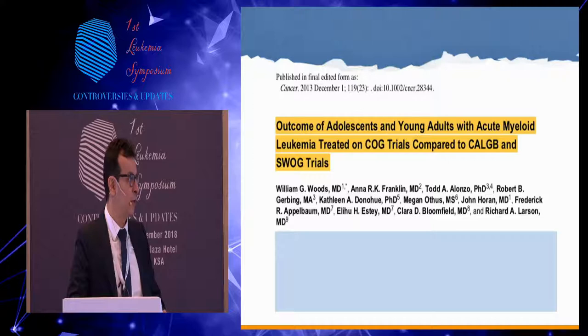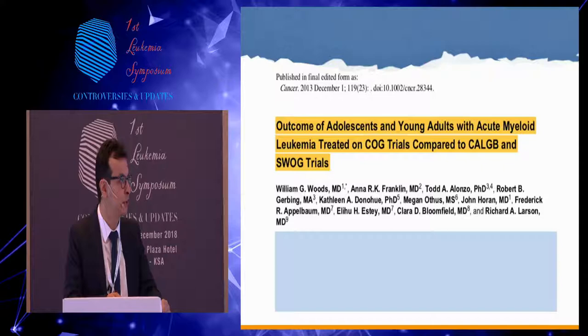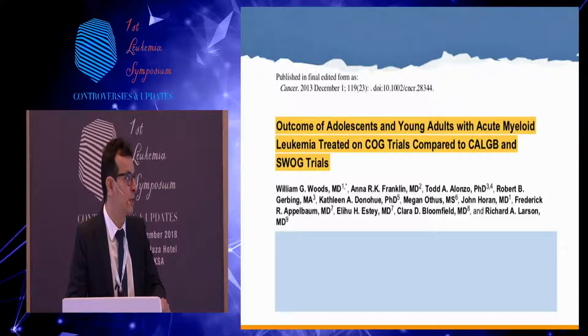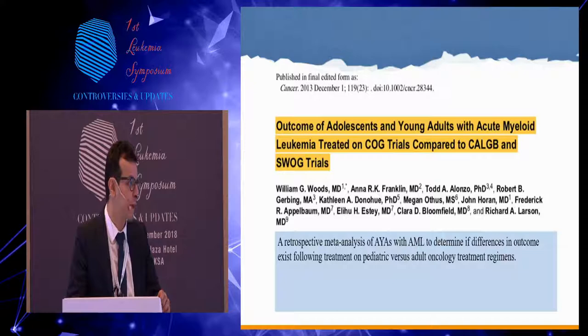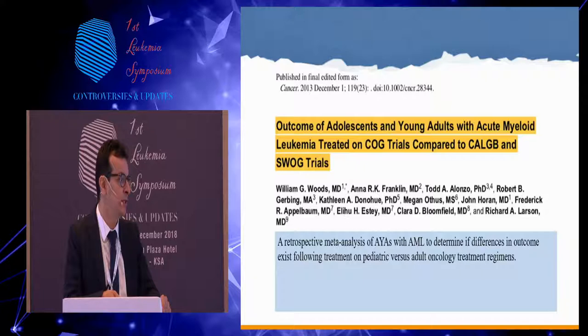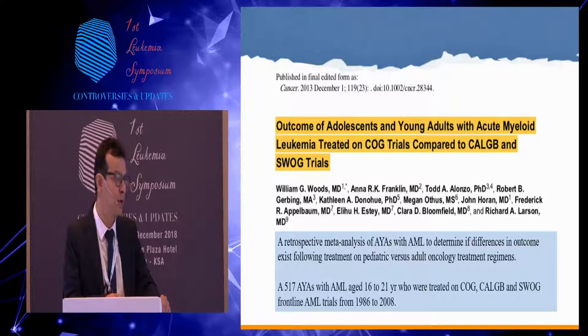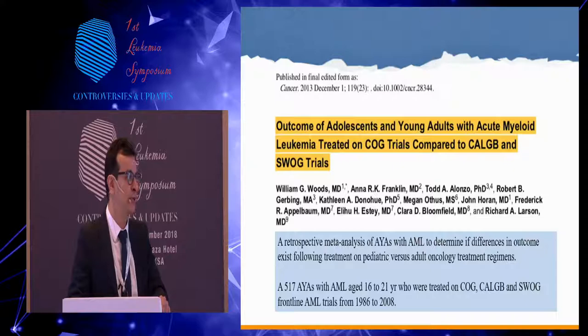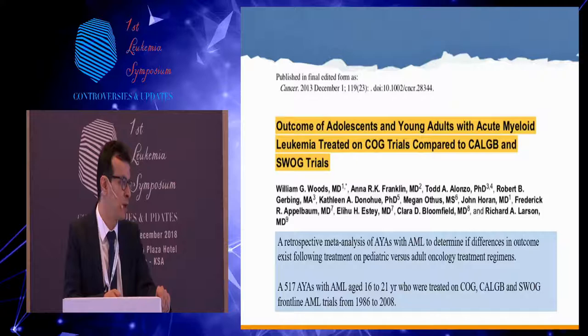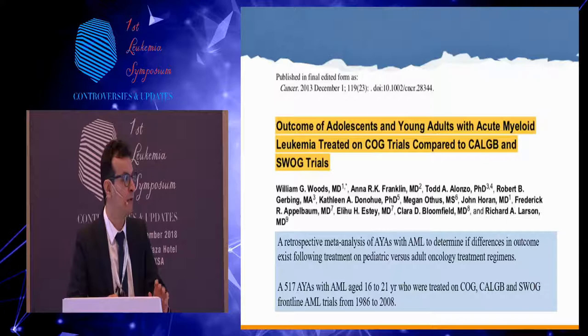We will look at a meta-analysis examining outcomes of adolescents and young adults with AML treated by the COG — the Children's Oncology Group — compared to the CALGB and SWOG adult trials. This retrospective meta-analysis looked at AYA with AML to determine whether differences in outcome exist following treatment on pediatric versus adult oncology regimens. More than 500 patients with AML aged 16 to 21 were treated in those trials for de novo AML over a long period from 1986 to 2008, across different trials for each group.